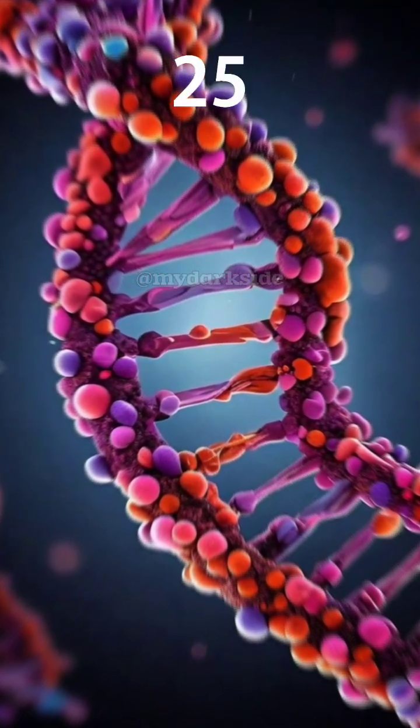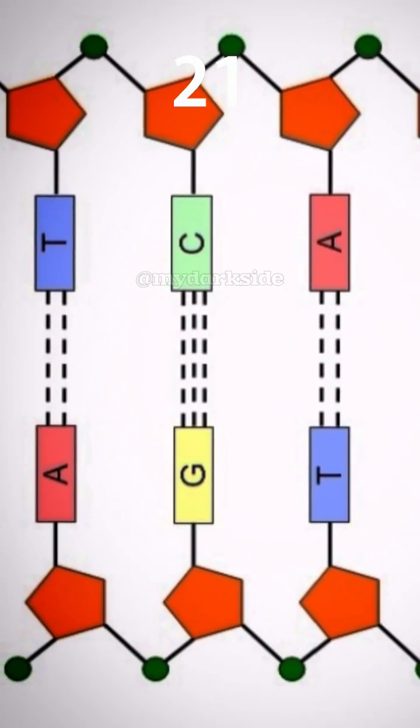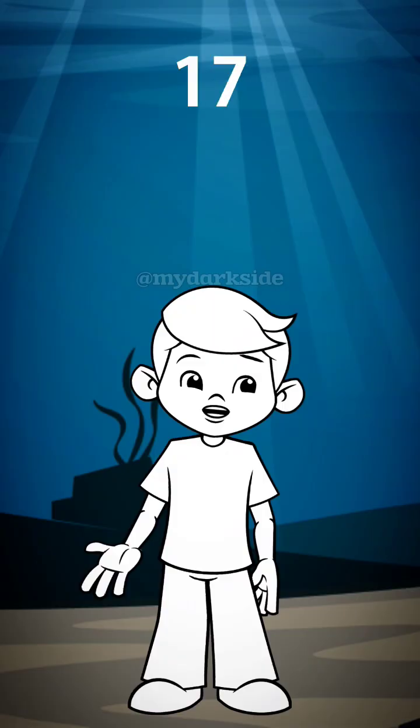Each nucleotide in the DNA pairs with a matching nucleotide in the mRNA. A pairs with U, T pairs with A, C pairs with G, and G pairs with C.